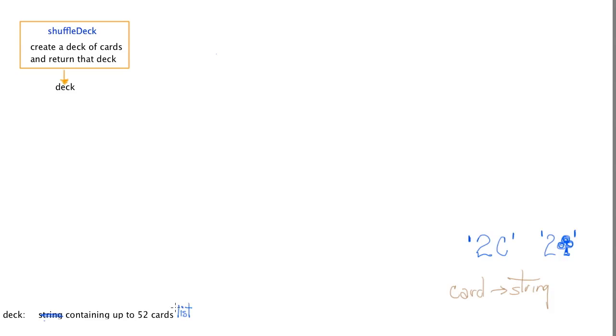A deck is comprised of 52 of these strings in a list. So it's a list of up to 52 card objects, which are strings. So this is our first black box.